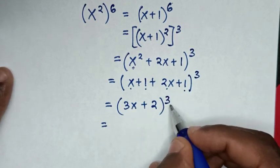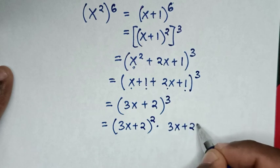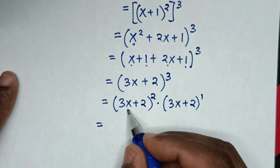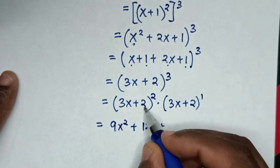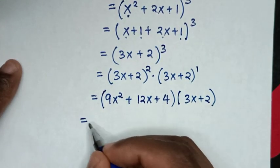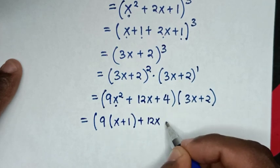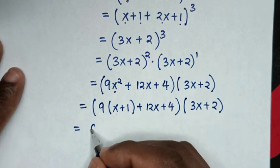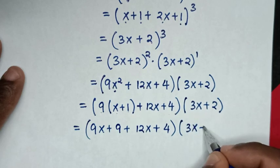Then it will be equal to — since power of 3 is the same as power of 2 plus 1 — it will be (3x plus 2) squared times (3x plus 2) to the power of 1. Then we'll expand (3x plus 2) squared: 9x squared plus 12x plus 12x plus 4, then bracket times (3x plus 2). Then x squared is substituted by x plus 1, so it will be bracket (9(x plus 1) plus 12x plus 4) bracket times (3x plus 2).